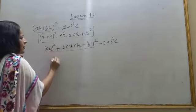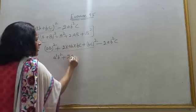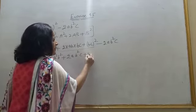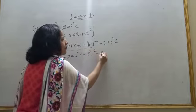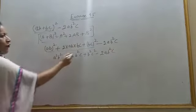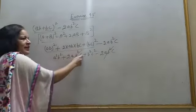So A square B square plus 2AB into BC, B square C plus B square C square minus 2AB square C. Cancel because like term. It is plus 2AB square C.